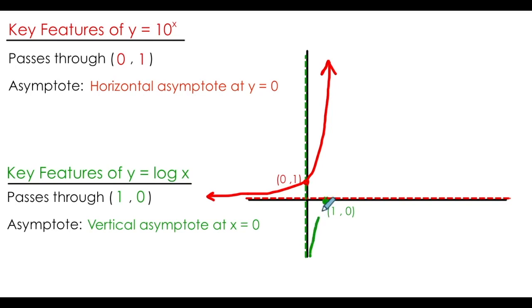We can do the same thing with the logarithmic function, subbing in x values, to develop this sketch. Remember, for my original function, I was not able to cross the x-axis as a result of my horizontal asymptote. The same is true for my inverse function, log of x, except I'm not able to cross the y-axis because of the vertical asymptote at x equals 0.